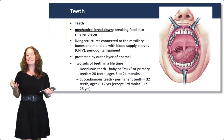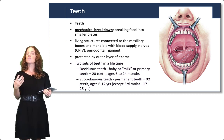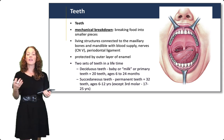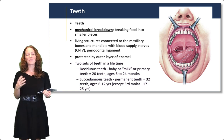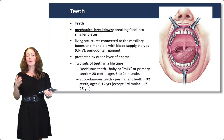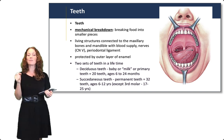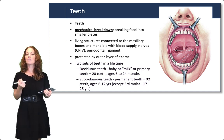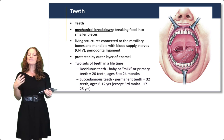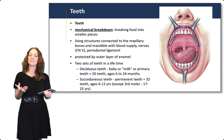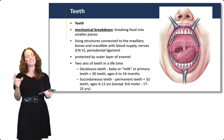The teeth are responsible for mechanical breakdown, breaking food into smaller pieces. They are living structures connected to the maxillary bone and mandible with a blood supply, and have nerves from cranial nerve 5 and periodontal ligaments. They're protected by an outer layer of enamel. There are two sets of teeth in a lifetime: deciduous teeth, or baby teeth, and succedaneous teeth, or permanent teeth. Please appreciate the interprofessional need to involve dental professionals in the overall health of our patients.